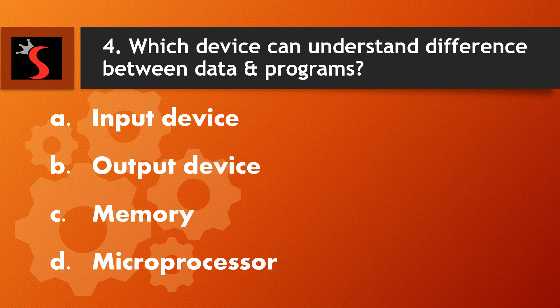The fourth question is: which device can understand the difference between data and programs? A. Input device, B. Output device, C. Memory, D. Microprocessor.